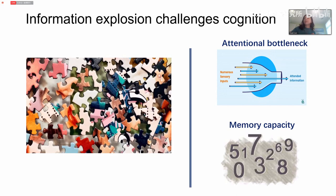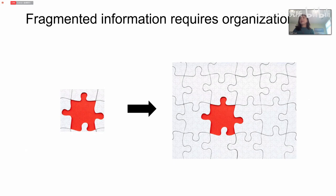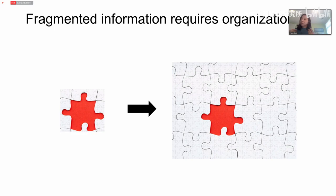Information explosion has another problem that makes us frustrated: information fragmentation. Everybody encounters that in the current world. For example, if there are just a lot of random, unconnected, meaningless puzzle pieces, we can regard that as information fragmentation. But if you know that all these puzzles actually come from a unified picture and they are connected with each other, and there are some hidden structures that organize all these puzzle pieces, then these are not information fragmentation. We can actually make sense of all this meaningless, unrelated, fragmented information.